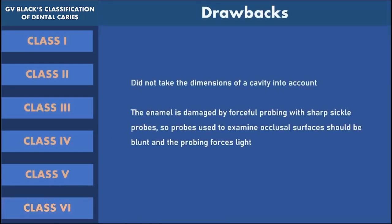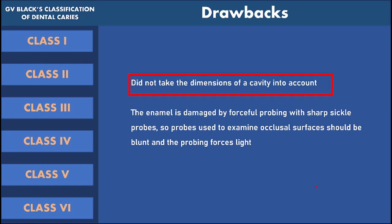Although it is easy, simple to understand, universally accepted, and one of the oldest classification systems of dental caries, G.V. Black's classification does have some drawbacks. First, it does not take the dimensions of the cavity's size into account. For example, on the occlusal surface of a molar, whether there is an initial pit and fissure caries or a deep caries extending up to the inner dentin, both are considered as G.V. Black's class 1 dental caries. So, it does not give any guidance for treatment planning about the caries.